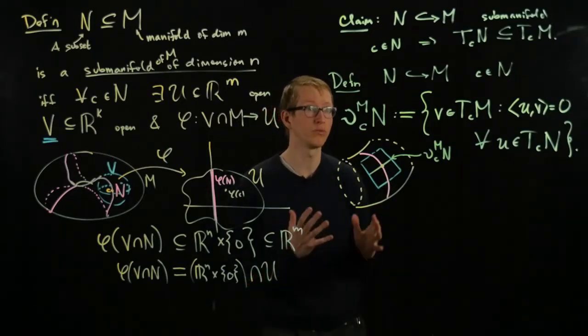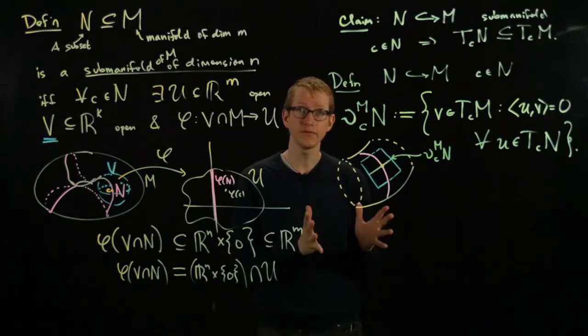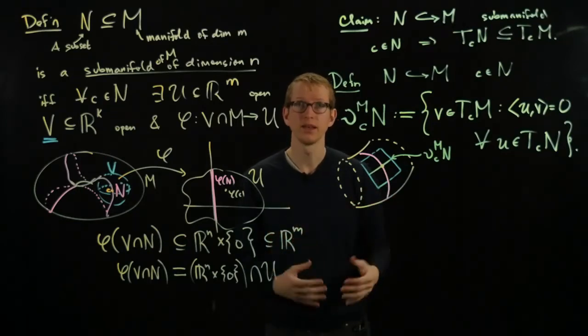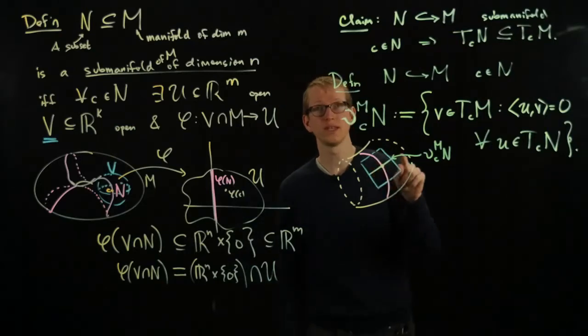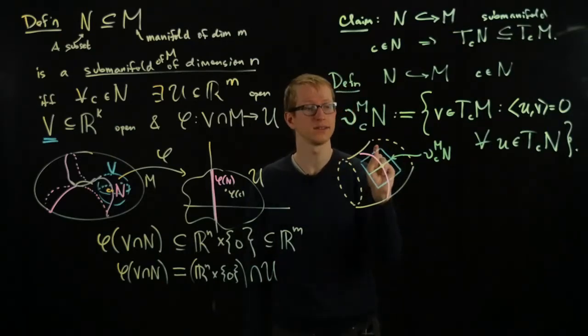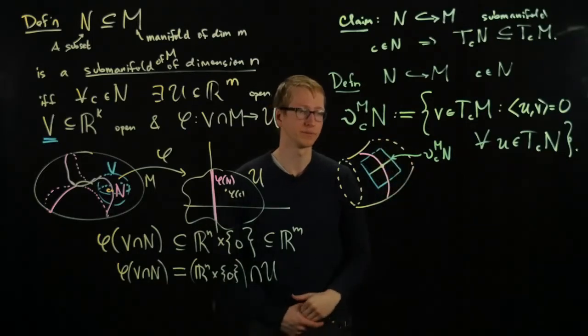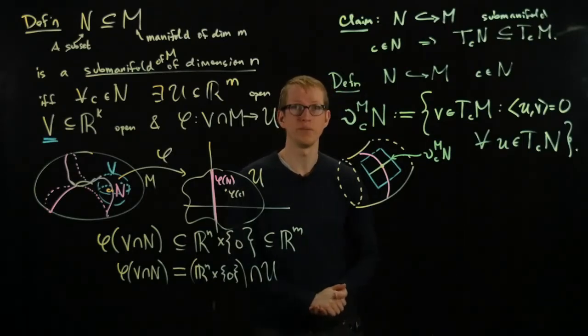And one of the very important things to note is that this really does depend on M. If I viewed the normal, this manifold N as a subspace of R3, then it would be a two-dimensional subspace and it would include this line as well as the line that's perpendicular to the surface of this donut which in this case would be sticking out of the board. So it highly depends on what manifold you're in.